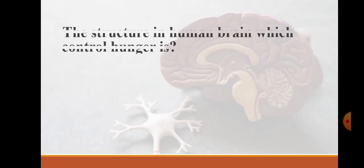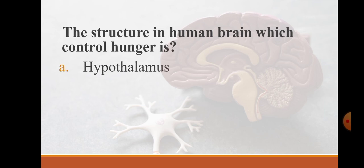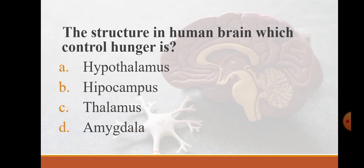The structure in human brain that controls hunger is hypothalamus, hippocampus, thalamus, or amygdala. The correct answer is hypothalamus. Hypothalamus also controls sleep-wake cycle, water balance, body temperature, and menstrual cycle.